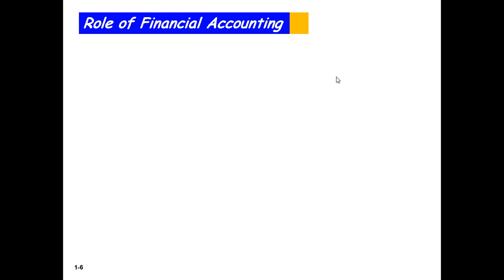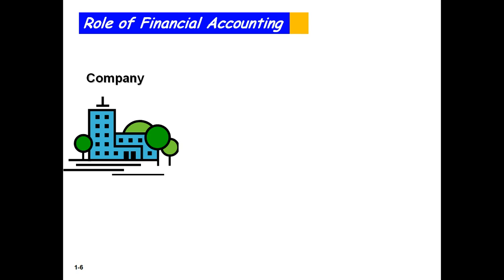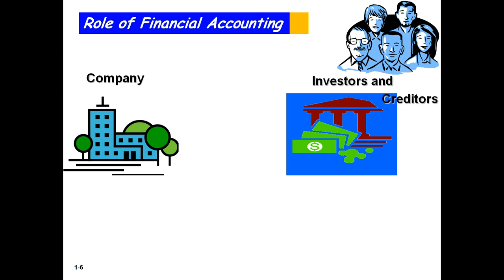Let's look at the role of accounting in our financial markets. When a company begins or wants to expand, it needs money to get going. There are basically two groups outside of the company where you can find money — investors and creditors. Investors buy ownership, particularly stock in the business when it's a corporation, and creditors lend money, such as a bank.